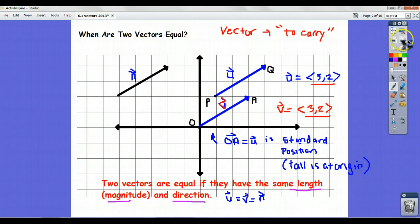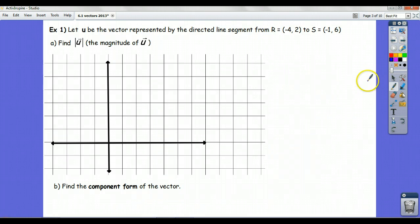So I want to do an example now. It says here, let u be a vector represented by the directed line segment from r equals (-4, 2) to s equals (-1, 6). And we need to find the magnitude. Remember magnitude means length.